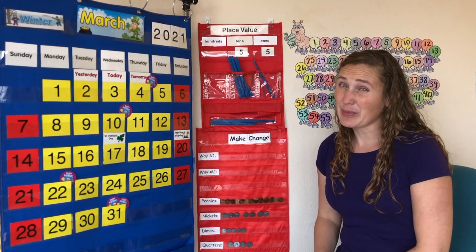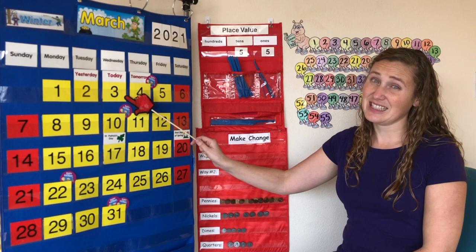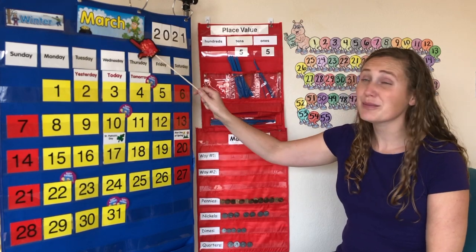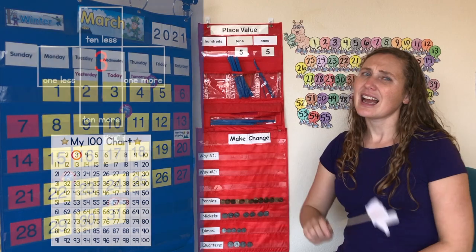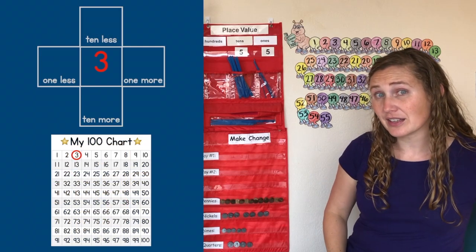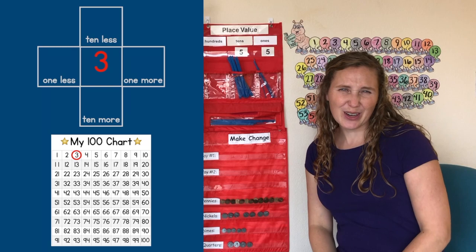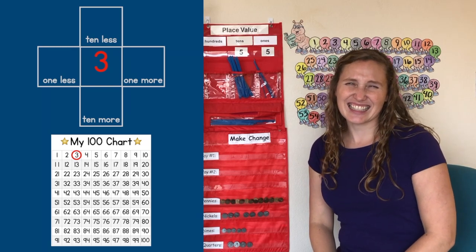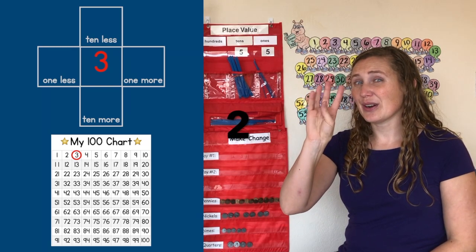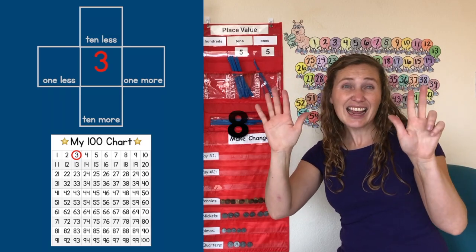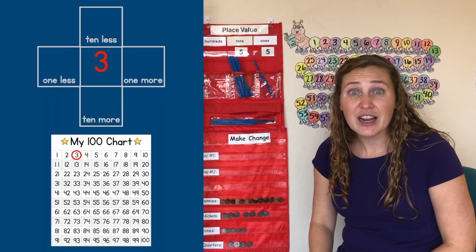Today's number is the number three. It's the third of March. Is three an odd or an even number? Do you remember our rhyme? Let's say it together. Zero, two, four, six, eight — I love even numbers, they're great.